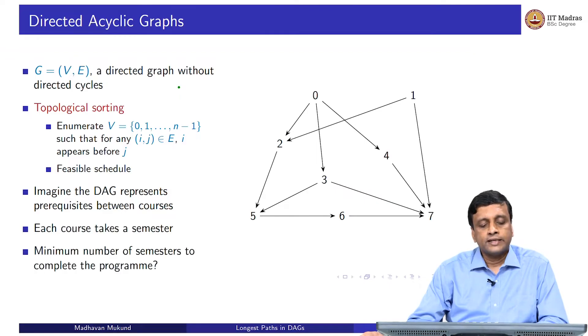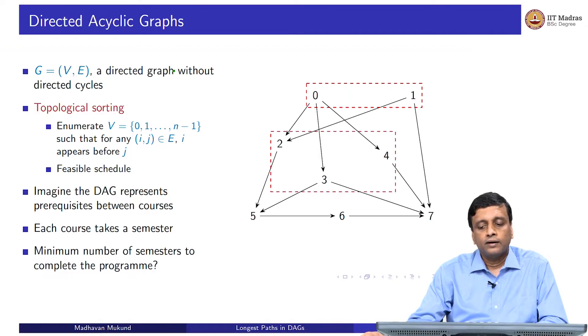Each course takes a semester. We take these courses as fast as possible. Initially, because 0 and 1 have no prerequisites, we can take them in the first semester. Then having done 0 and 1, we find that we can do 2 and 4 because they only depend on 0 and 1. And we can do 3 as well. So 2, 3 and 4 are courses we can take in the second semester.